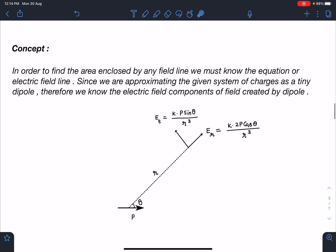Let's discuss the concept part. In order to find the area enclosed by any field line, we must know the equation of field line. So one part of the question will be to find the electric field line equation, which itself is a very good question. Since we are treating this as a tiny dipole, these point charges are very close to each other. For a dipole, we know the electric field components at some random point far away from the dipole.